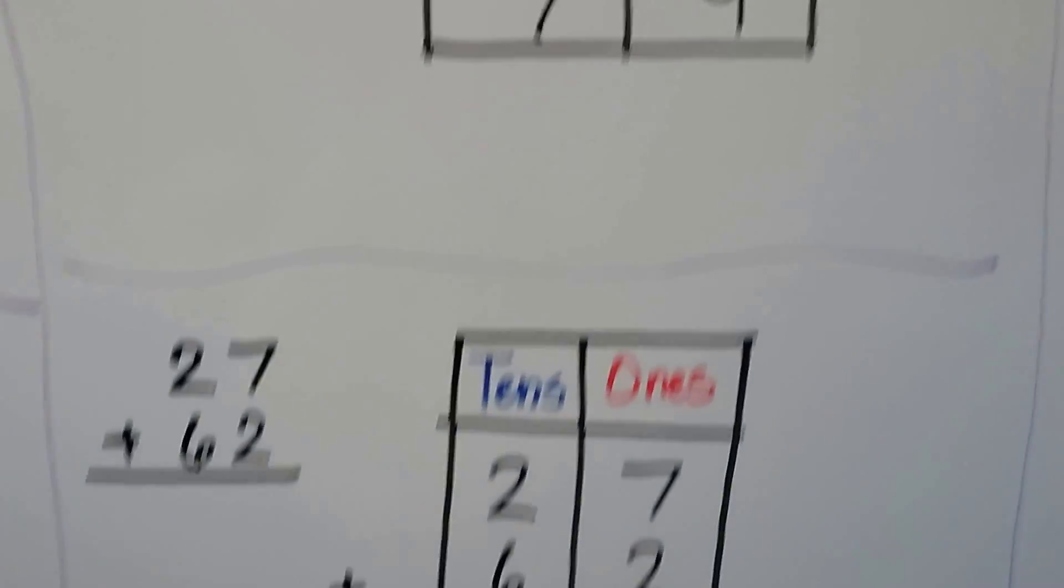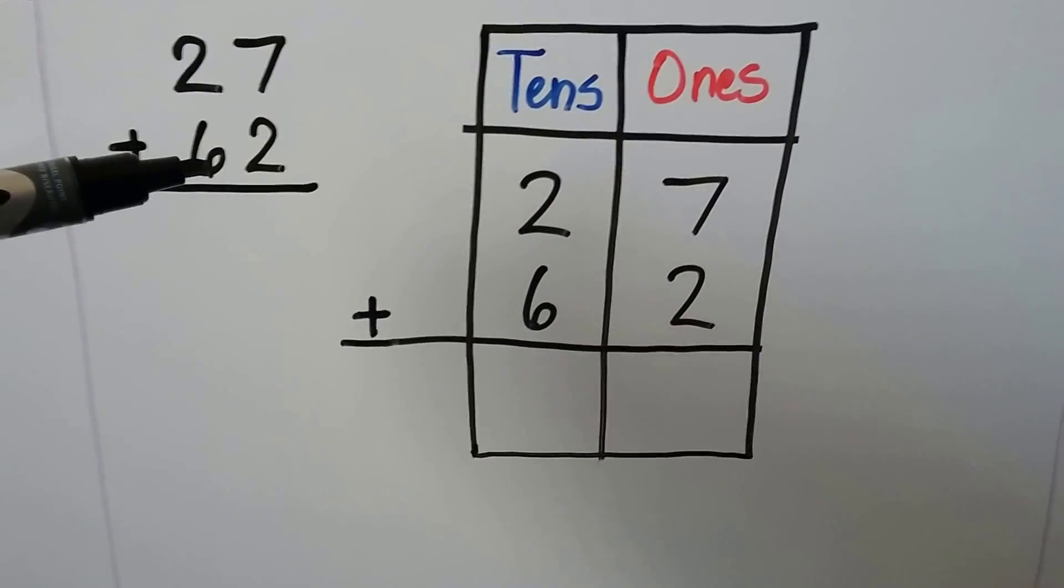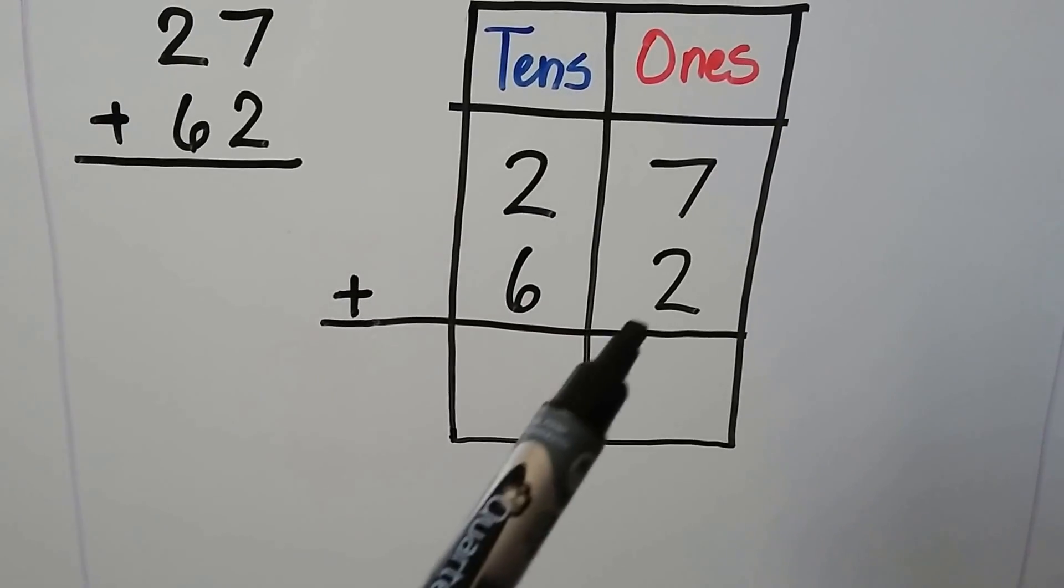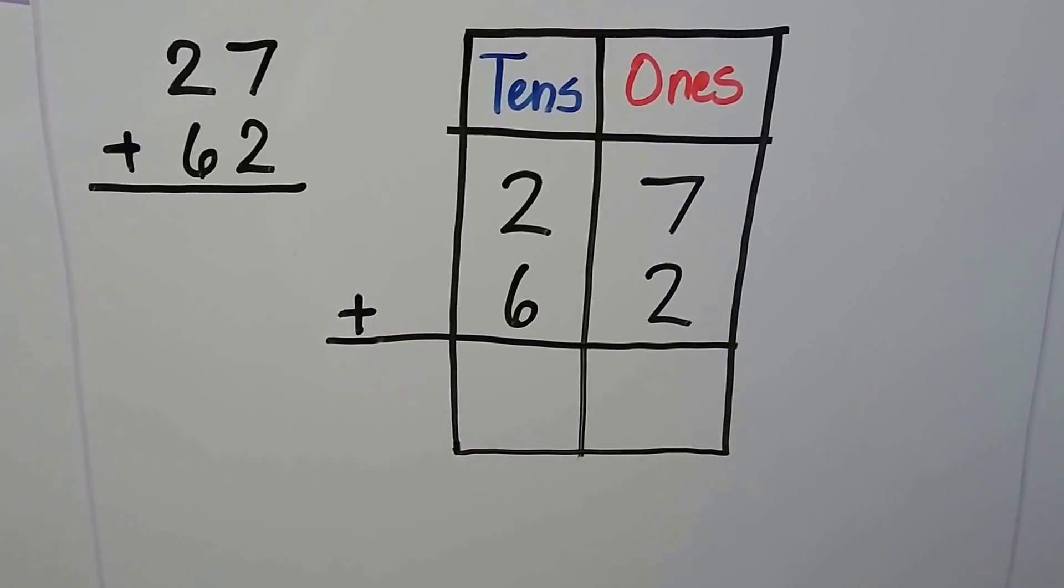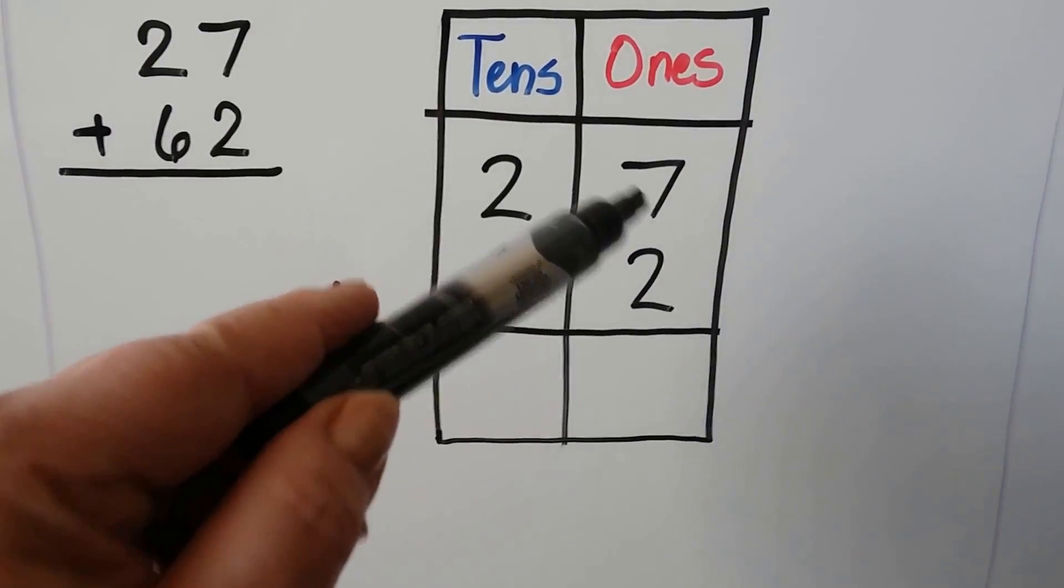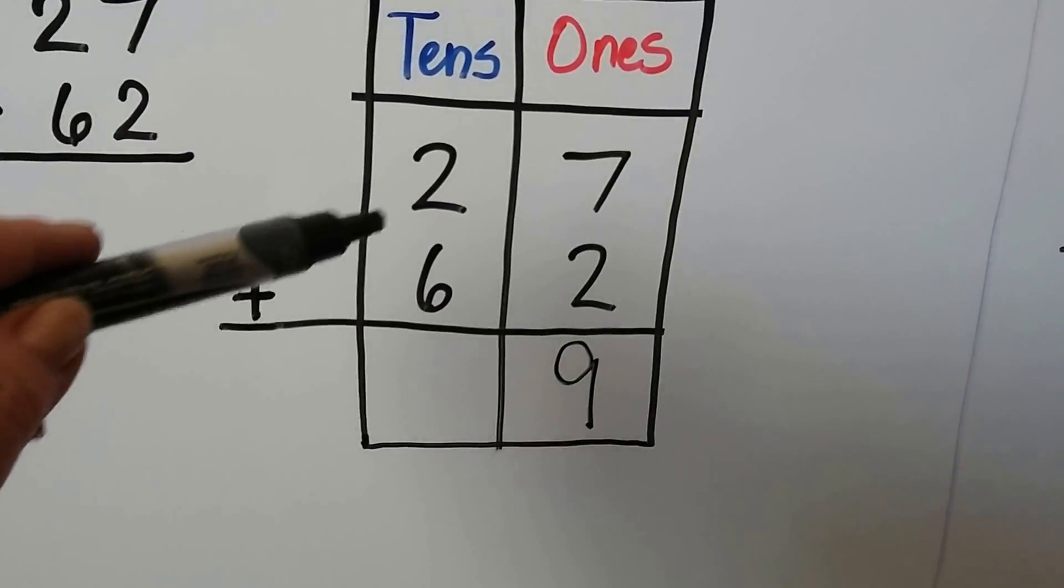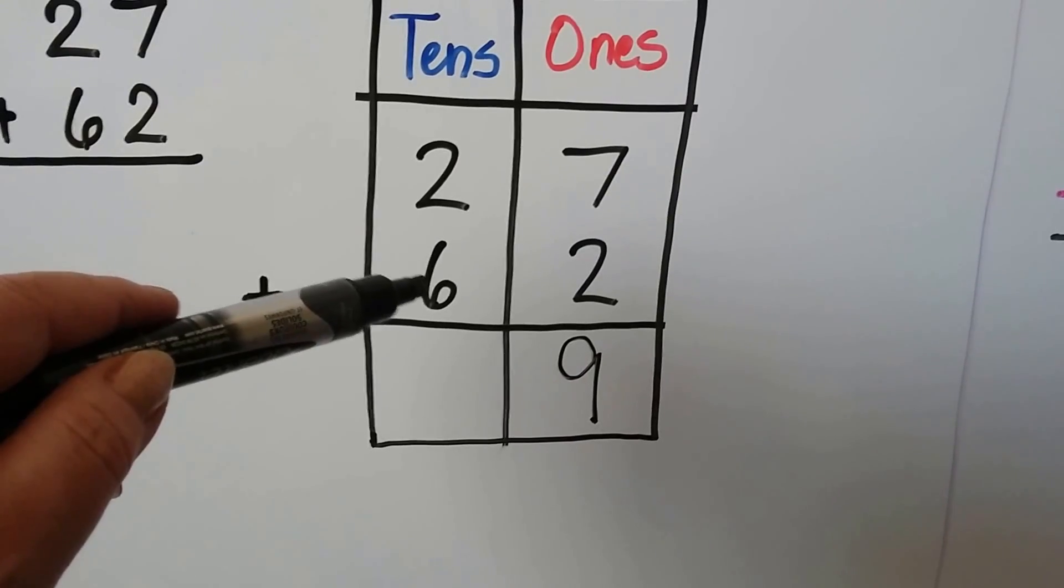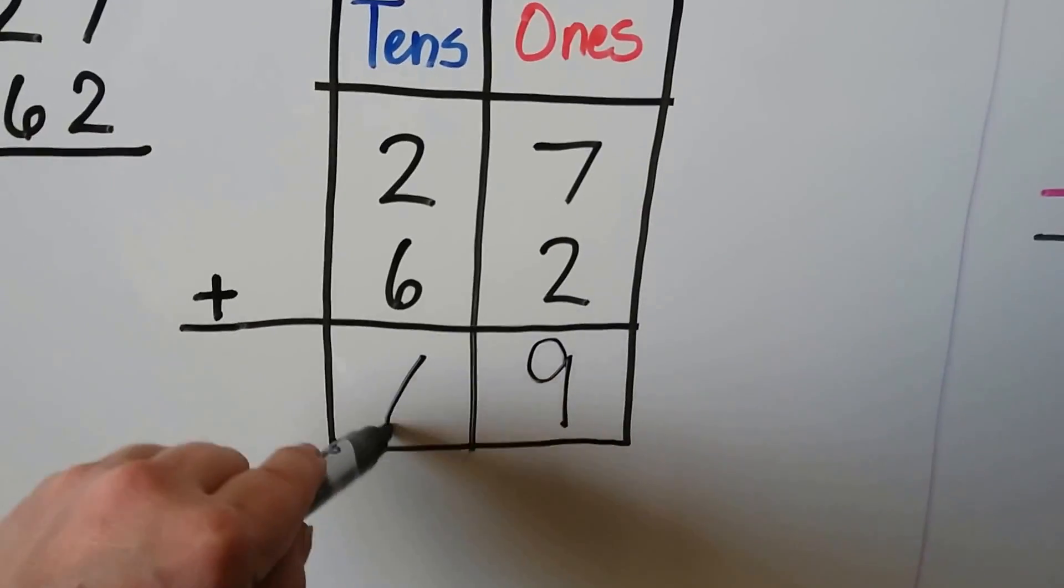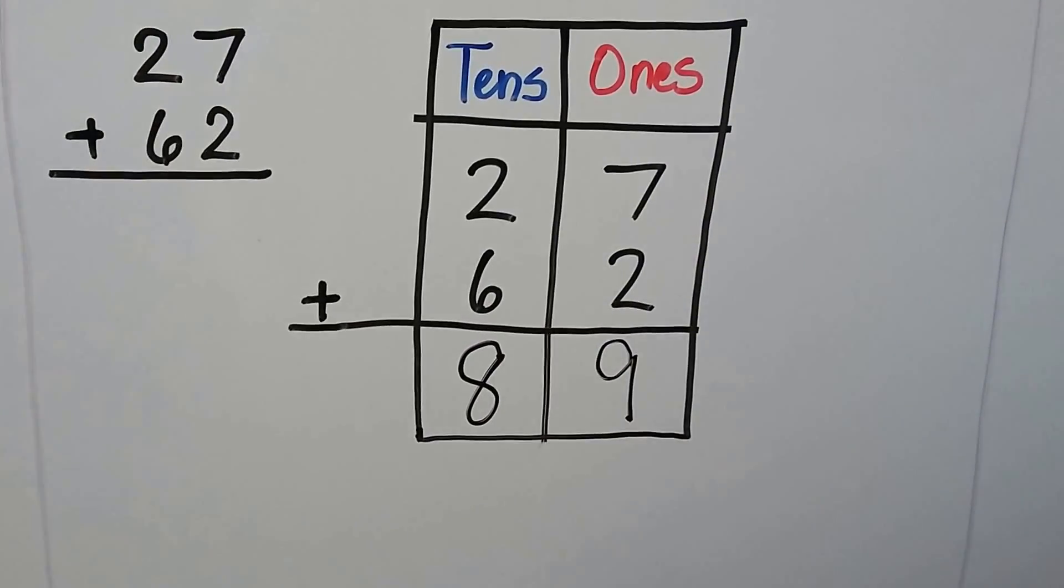Let's try another one. We have 27 plus 62. That means we have 2 tens and 7 ones and we're going to add 6 tens and 2 ones. We start in the ones place with the larger addend 7. We count on 2: 7, 8, 9. In the tens place, we start with the larger addend 6 and count on the 2: 6, 7, 8. This means 27 plus 62 is equal to 89.